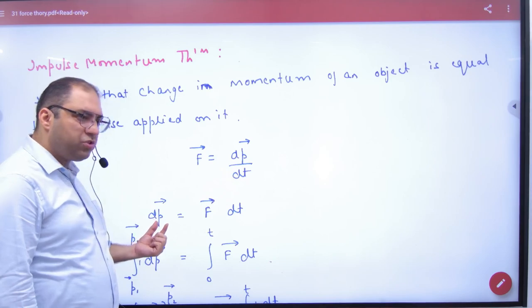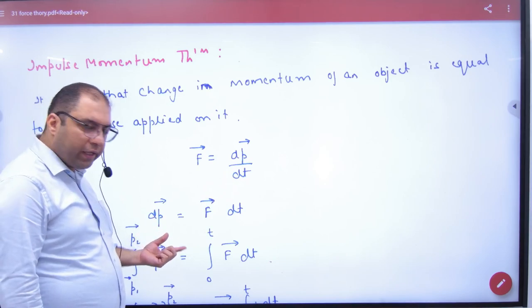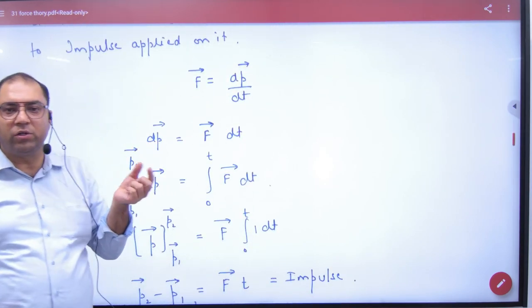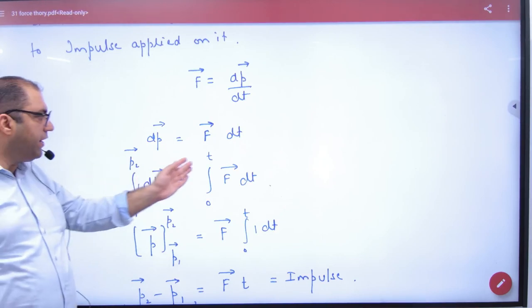So F vector is equal to dp by dt vector. Cross multiply, this is change in momentum vector. If you want to take a small change, if you want to take a total change, then integration. We will do both sides integration.